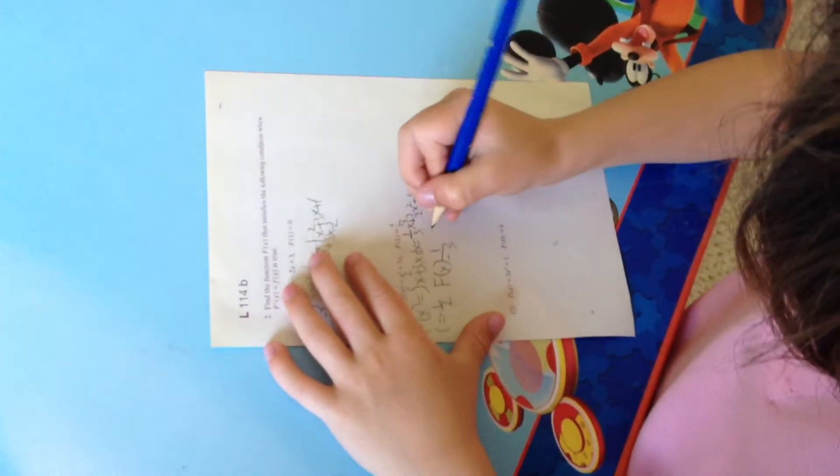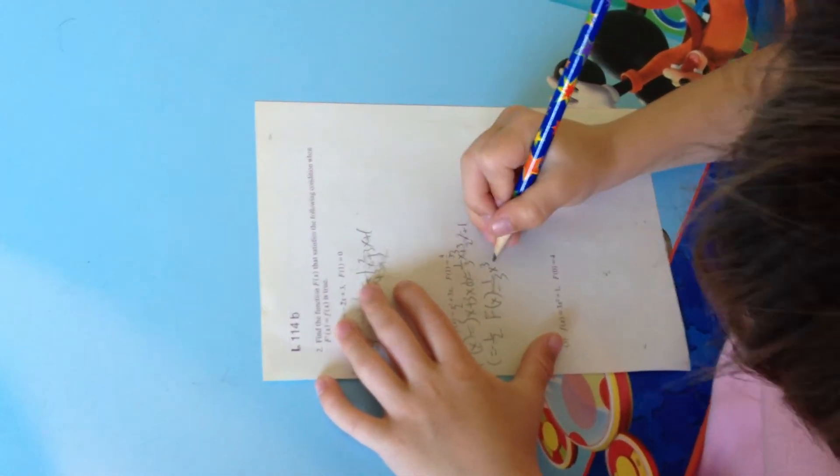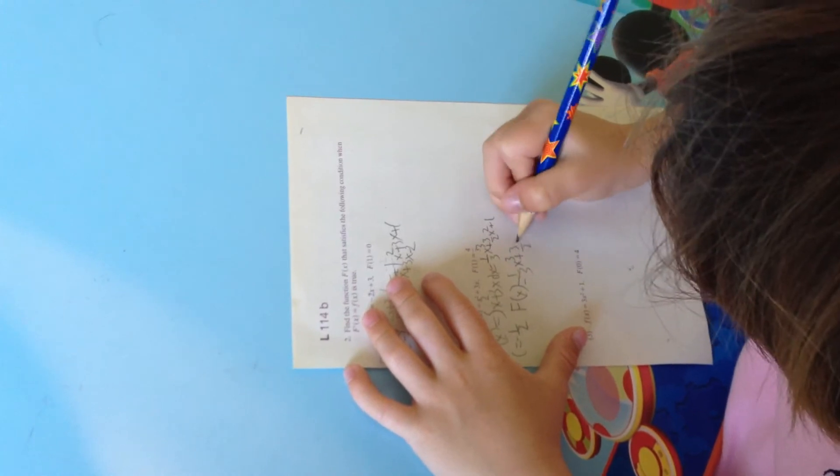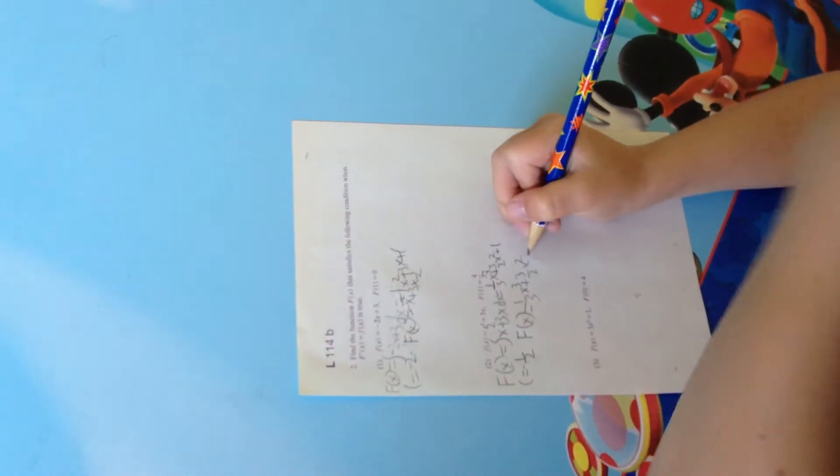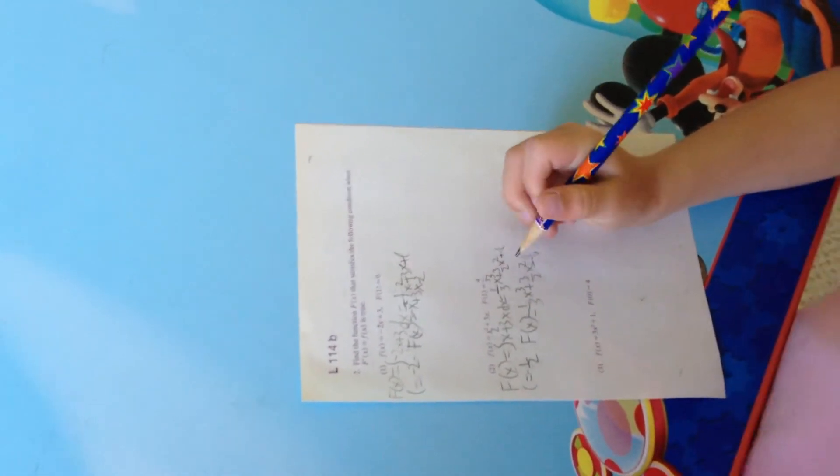Which equals... Mm-hmm. 1 over 3 X cubed plus 3 over 2 X squared uh minus 1 over 2. Great job.